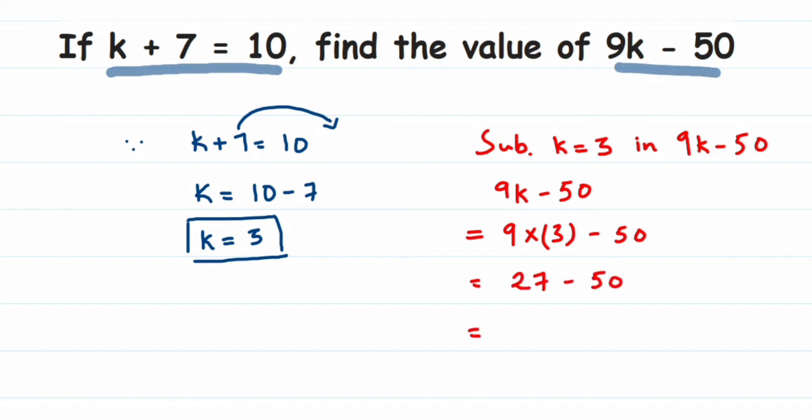50 minus 27 is 23, but since 50 is the greater number and its sign is negative, we get negative 23. That's it, it was a simple question. I hope it's clear. If you have any questions or doubts, drop a comment below. Thank you for watching.